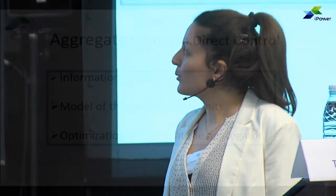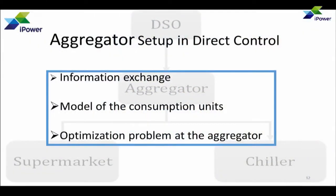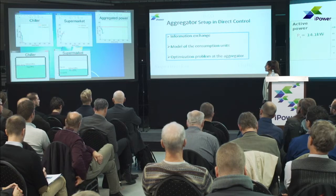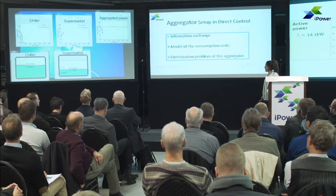To develop an aggregator setup using direct control, we need to establish three items: the information exchange between components, the model of the consumption units, and the optimization problem at the aggregator. Let me go through the details of each of these. You can also see on screen that the chiller is switched off according to aggregator commands and the supermarket is trying to follow the reference.